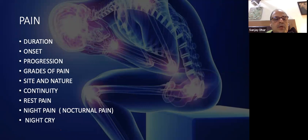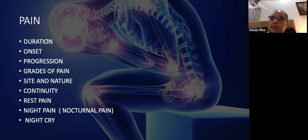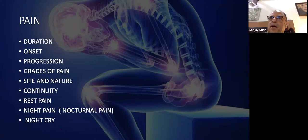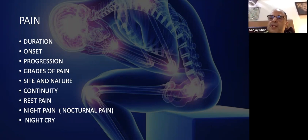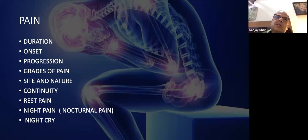For pain — duration, onset, progression, grades of pain, VAS score if you want extra marks. Site and nature: is the pain in the front of the hip, the sides, or the posterior part? You must differentiate between backache, sciatic pain, and hip pain. In history, if it is an intra-articular pain, the patient will hold the trochanter with fingers in the femoral triangle anteriorly and thumb posteriorly — they squeeze the hip and say 'pain here.' A sciatic pain patient will keep their hand at the lumbosacral junction toward the posterior superior iliac spine.